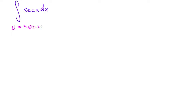You let u equal to secant plus tangent. There's nothing to tell you to do this — it's what the book calls a clever substitution. So if you want to be clever, you let u equal to secant plus tangent.